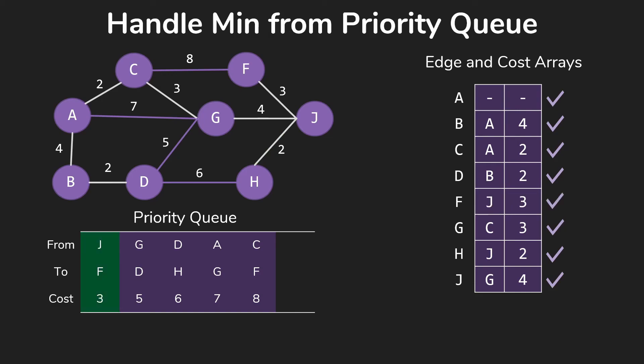We once again remove the smallest item from our priority queue. That's our JF for 3. And that gave us all of our vertices in the spanning tree. We'll check that and stop our loop.